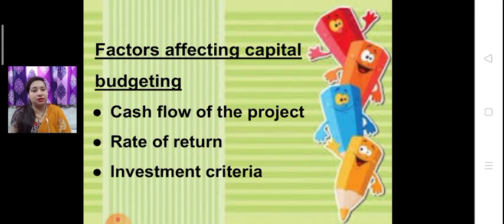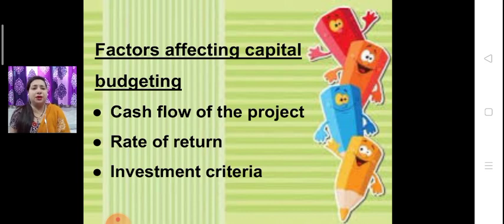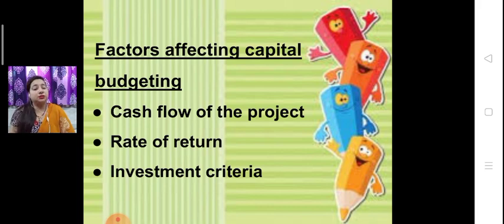Next one is investment criteria. The financial manager considers the formalities and the rules, regulations, and policies — like operating costs — which need extra money. If the investment criteria is smooth, then we will take a risk. If it is not smooth, it may create a burden on our cash flow, meaning it is not profitable. So these are three factors which affect our decision to invest in a long term plan, which is called capital budgeting.